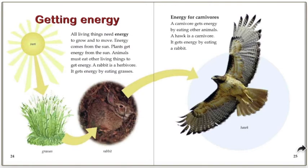Getting energy. All living things need energy to grow and to move. Energy comes from the sun. Plants get energy from the sun, and animals must eat other living things to get energy. A rabbit is an herbivore and gets energy from eating grasses. A carnivore, like a hog, gets energy by eating other animals — this hog gets its energy by eating a rabbit.